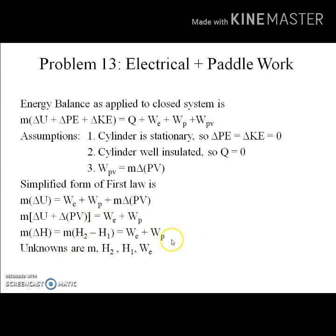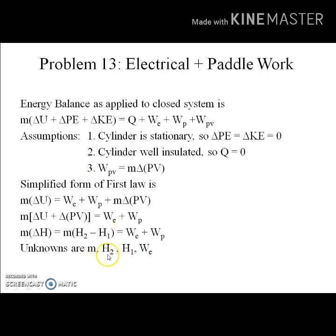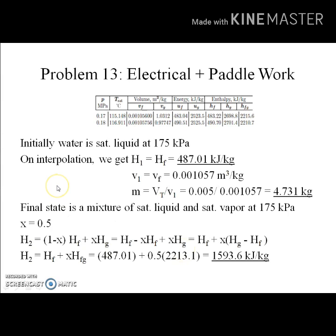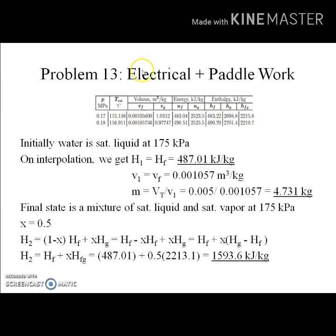In this reduced energy balance, the unknowns are: mass m, enthalpies at the initial and final states h1 and h2, and the electrical work W_electric. The paddle work is given as 400 kilojoules. We will find these quantities one by one using the steam tables.